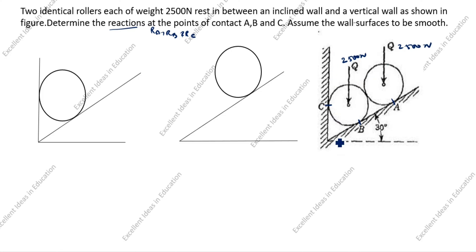To find the reactions Ra, Rb, and Rc, first we will draw the free body diagram of each roller. Second, we will use the equilibrium condition to solve the reactions, and also use Lami's theorem. One condition for Lami's theorem: three concurrent forces are required.